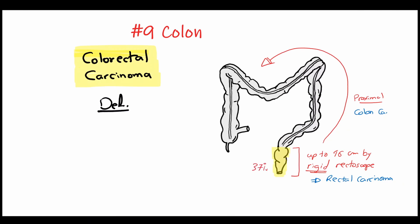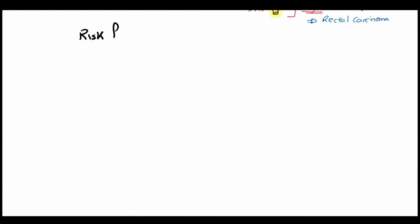Rectal tumors represent 37% of all colorectal tumors, while sigmoid tumors are in the second place with 27%, and in the third place is the cecal tumors with 14%. Now we will talk about the risk factors of colorectal carcinoma.